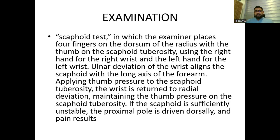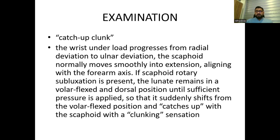There are various tests for examination of carpal instability. One of the most common and easy tests is the scaphoid shift test, in which the examiner places four fingers on the dorsum of the radius with the thumb on the scaphoid tubercle. Ulnar deviation aligns the scaphoid with the long axis of the forearm; applying thumb pressure, the wrist is moved to radial deviation. If the scaphoid is sufficiently unstable, the proximal pole is driven dorsally and pain results. Another test is the catch-up clunk.